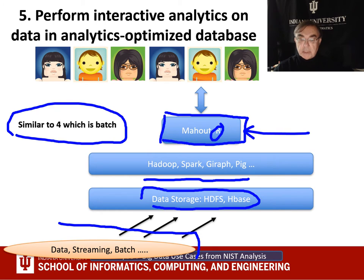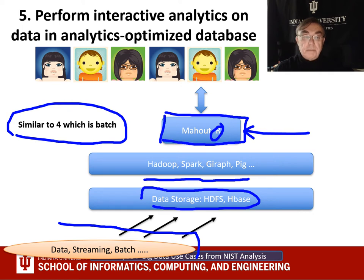We have the same components — Hadoop, Spark, Giraph, Pig — with the same storage of HDFS and HBase, and the same data. We've just left off the SQL part. This generalizes well because typically in scientific data you're doing some sort of analytics. R is used a lot in biology. We will come to that in the next lesson. So that's the end of this lesson.